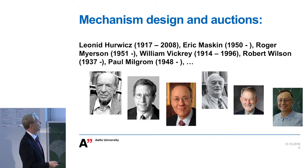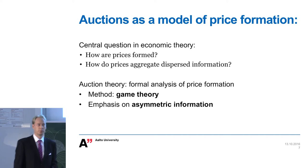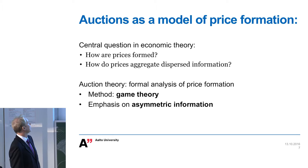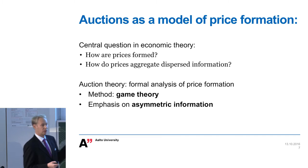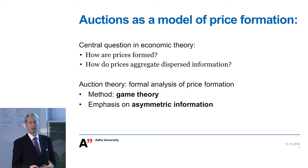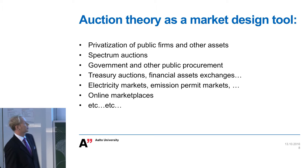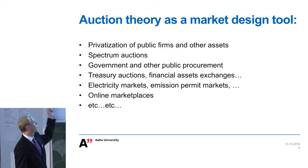One way to see auction theory is that it is the modern version of theory about how prices are formed. Central questions include: how are prices formed, and how do prices aggregate dispersed information? This is something that general equilibrium theory could say nothing about, because it requires asymmetric information to ask this question. Auction theory is also a very powerful tool for market design, with lots of important applications.